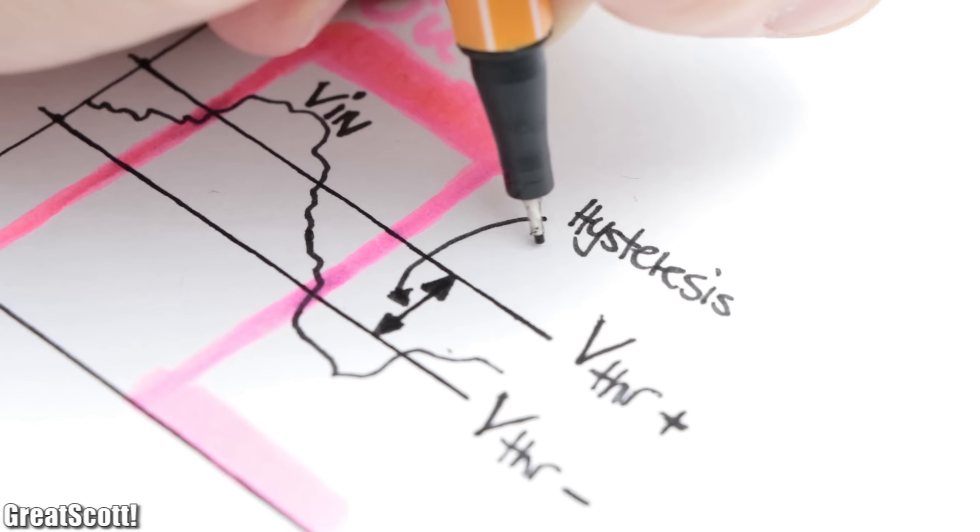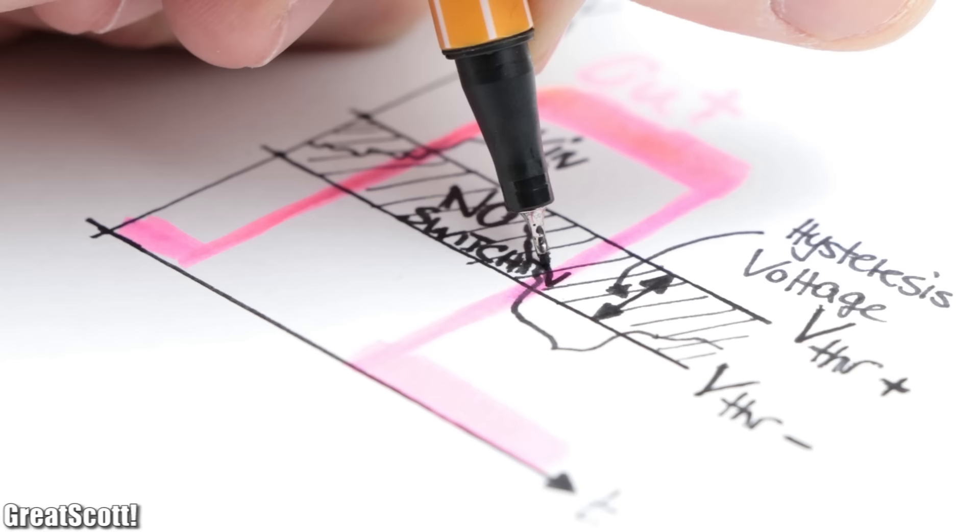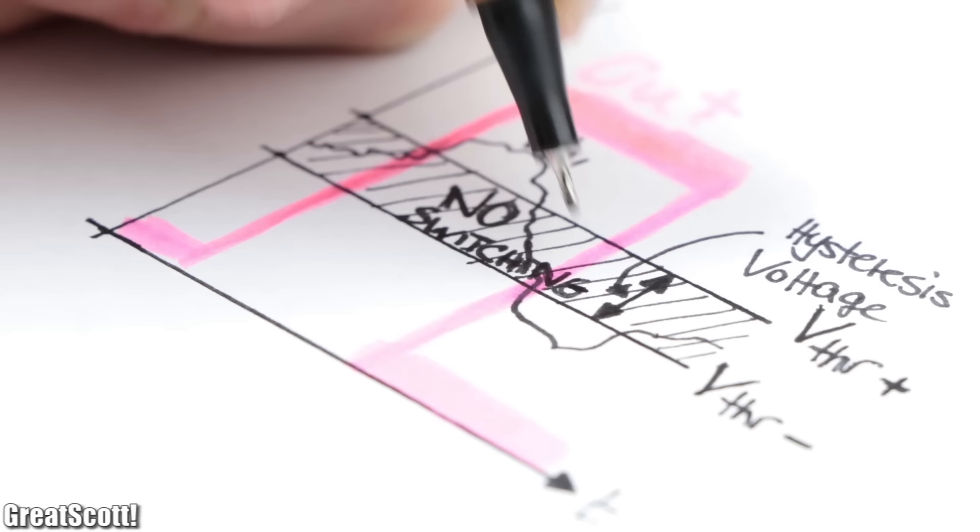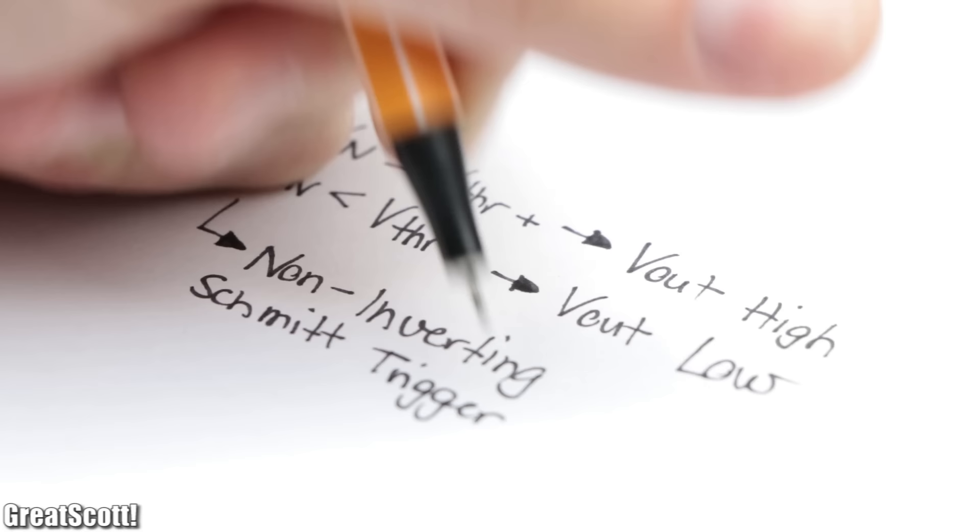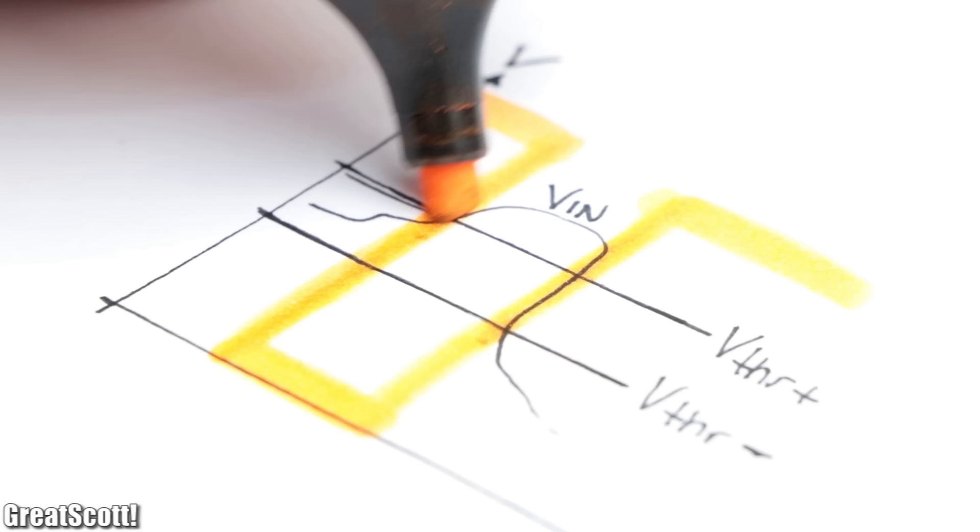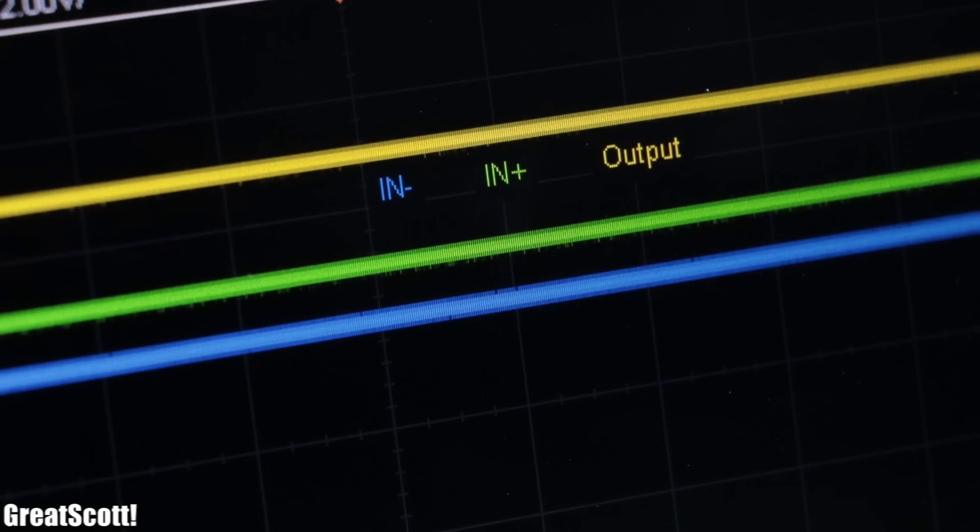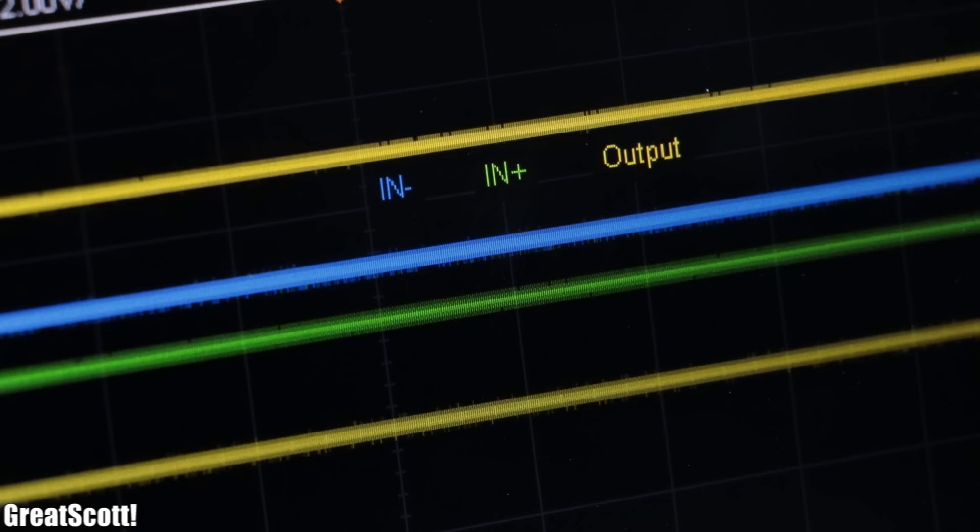Because in this so-called hysteresis voltage between the two thresholds, no switching of the output is possible. Now, this functional principle of a Schmitt trigger would equal that of a non-inverting one, while an inverting Schmitt trigger would basically work the same but reverses the output states for its high and low threshold values.